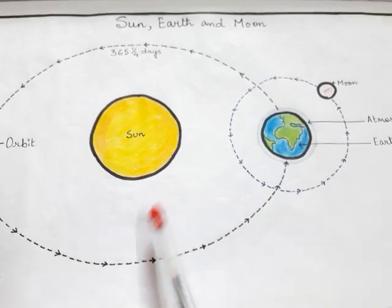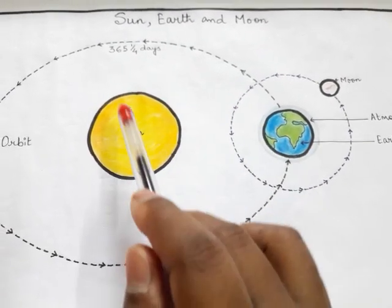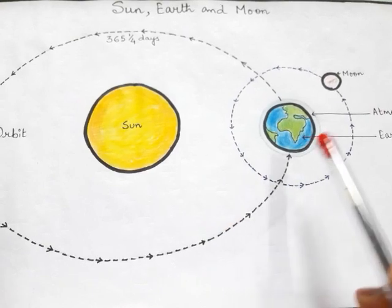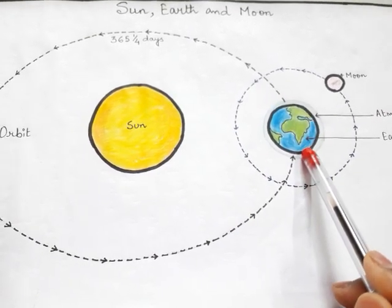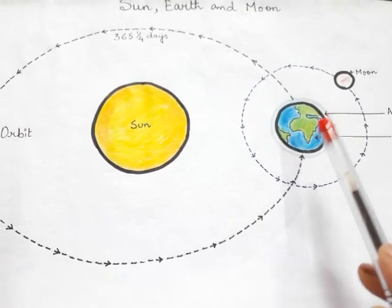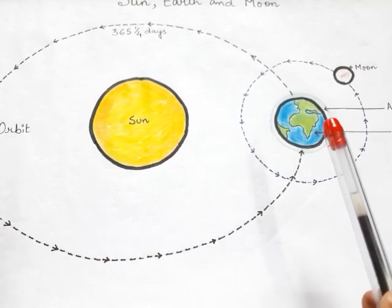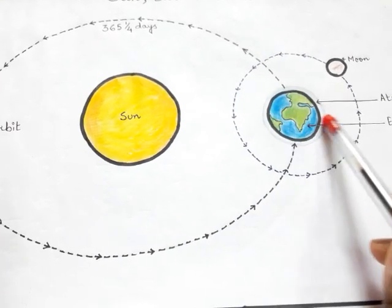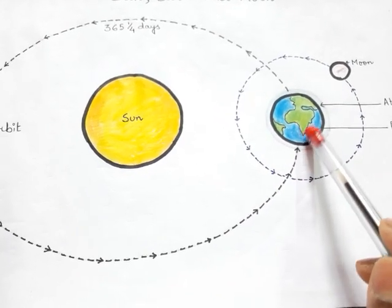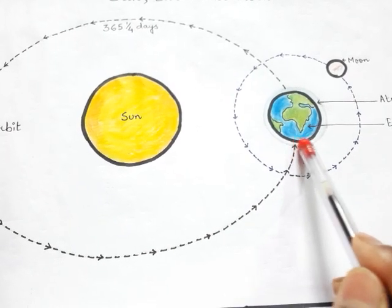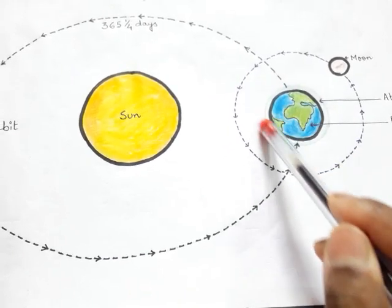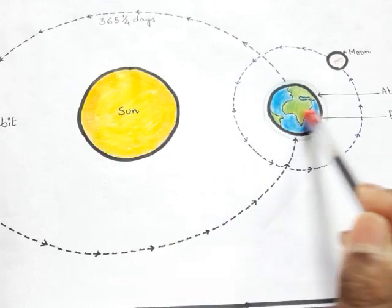Here I have drawn a Sun, Earth, and Moon model. Earth looks like a round ball from space, but it is not a perfect ball — it bulges at the equator and is flat at the poles. This portion at the equator is slightly wider, and the poles are a little flat.